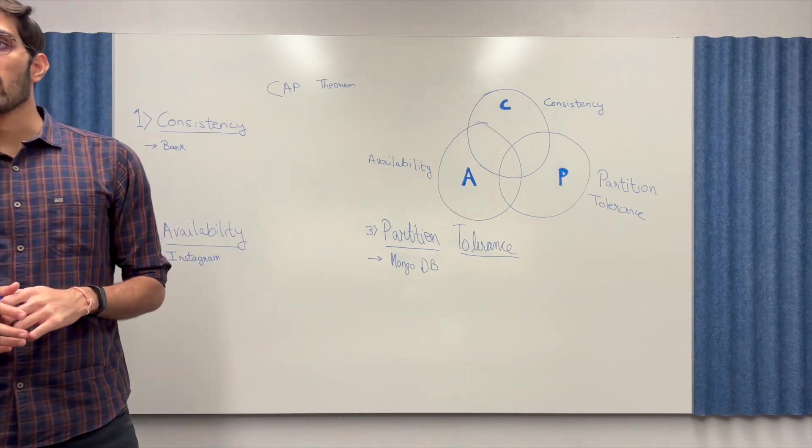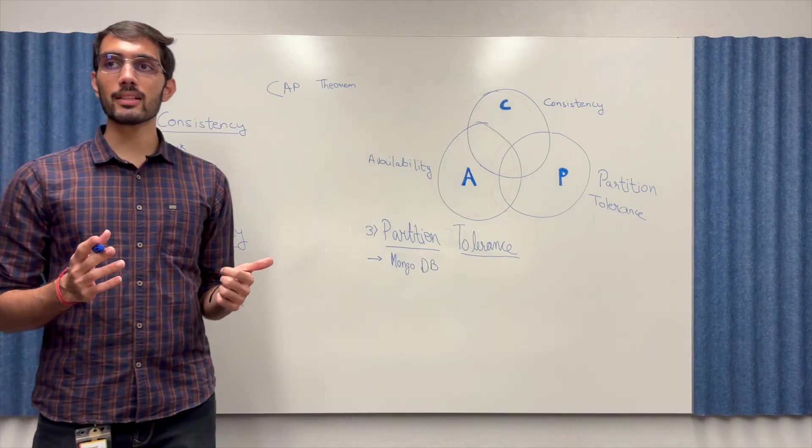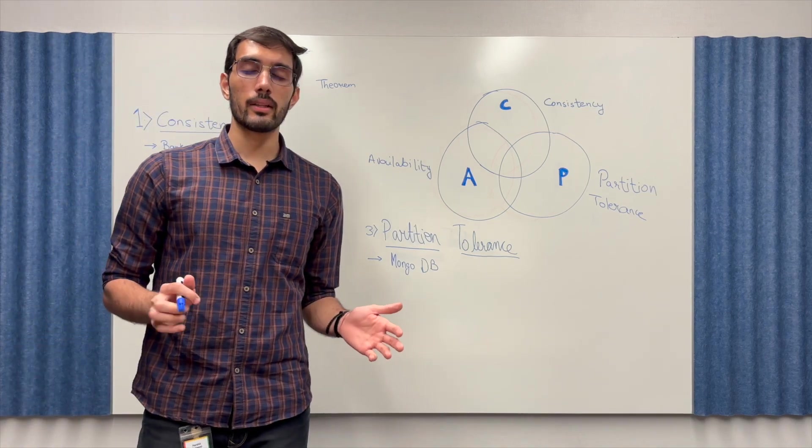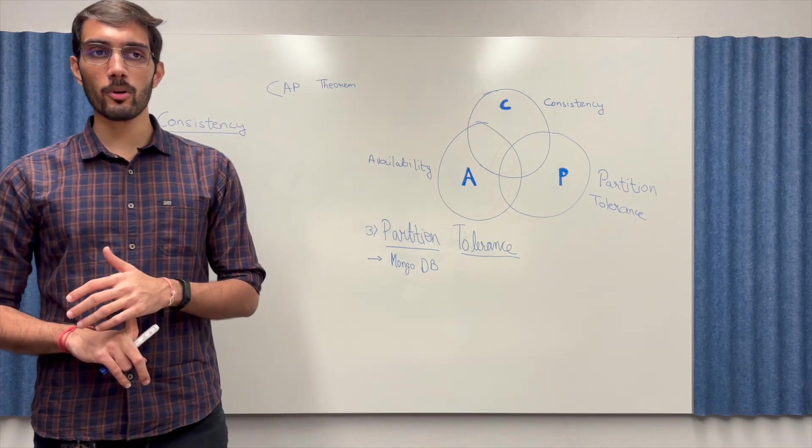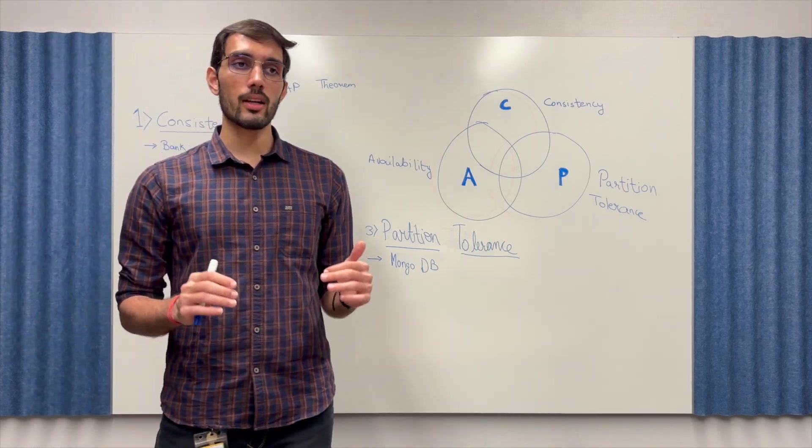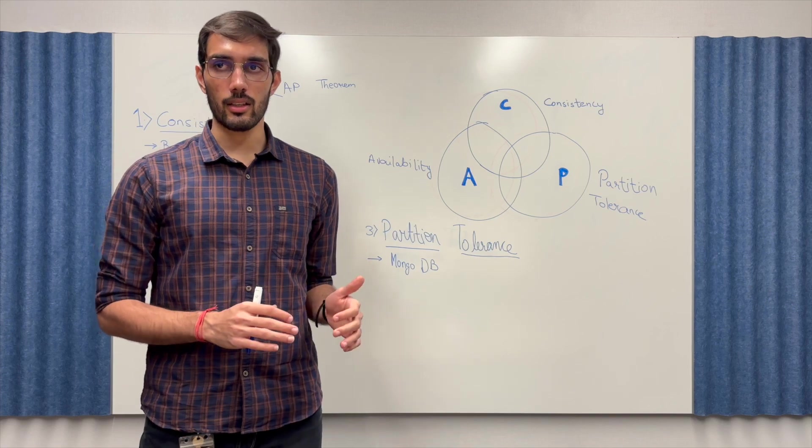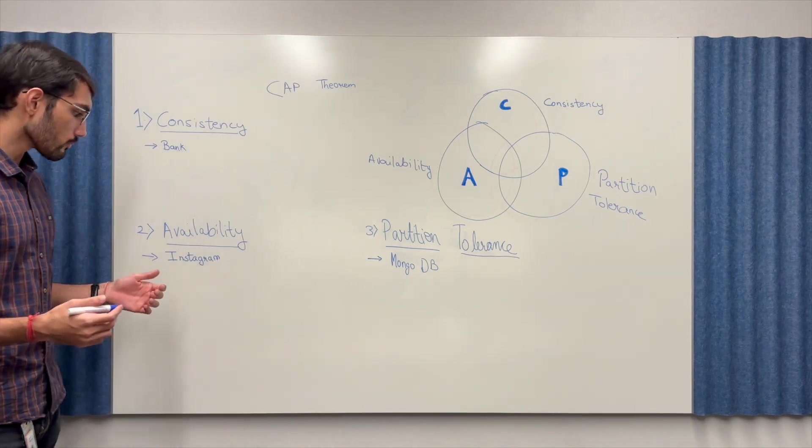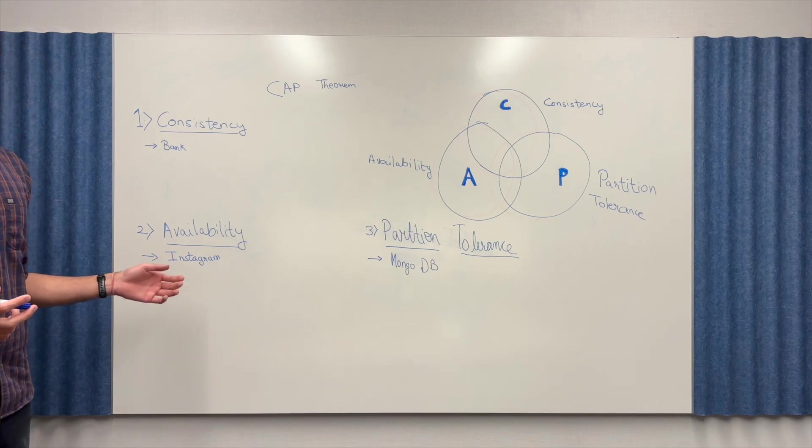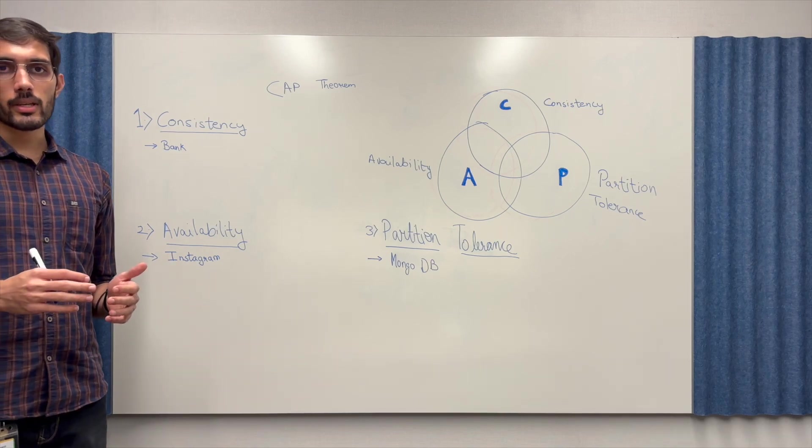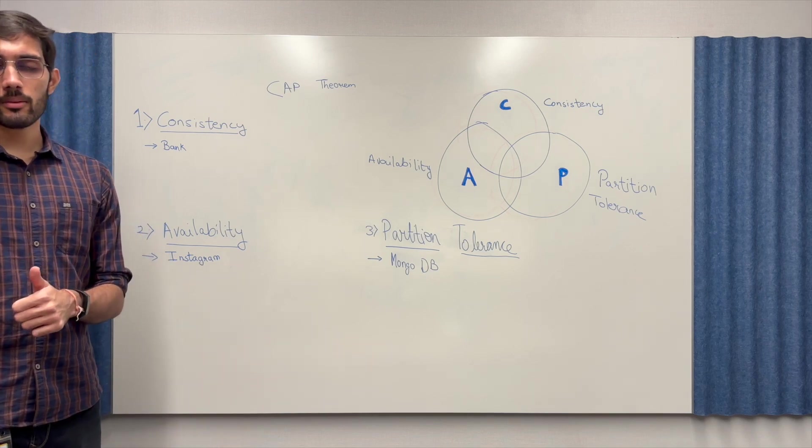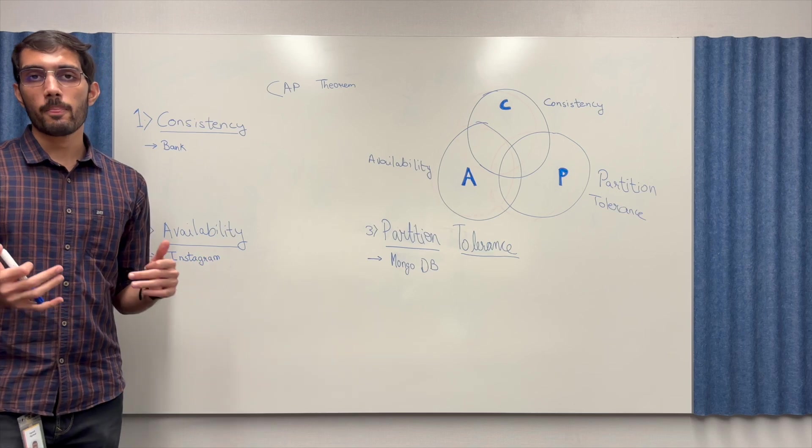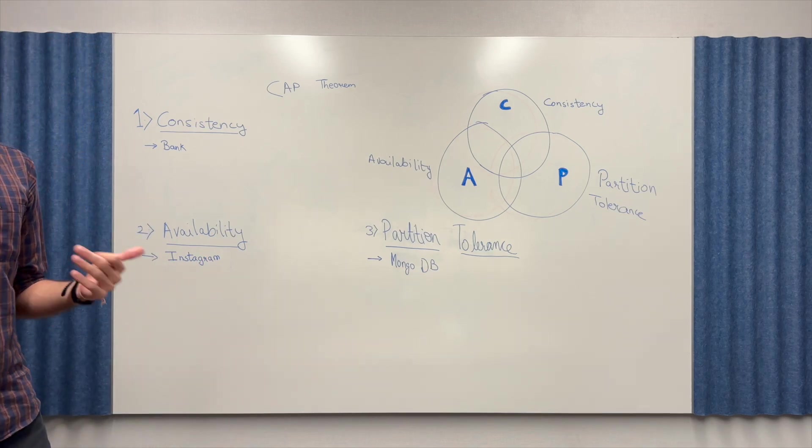Next is availability. Availability means that the system is always up and running and it's always ready to respond to your request. Whether it responds with a response with the right response or it gives you an error if your request is incorrect. Think of it like Instagram's like system. If you are on Instagram and you are sending a like, that does not mean that someone else on Instagram should wait till your like is reflected on all servers. They should also be able to like a post.